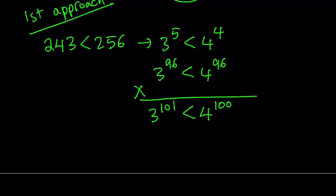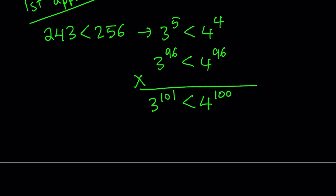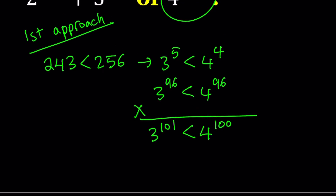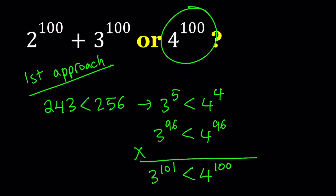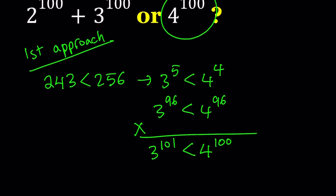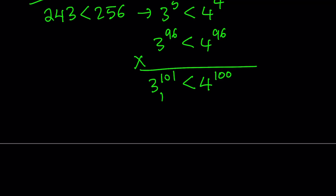Is there another way to get to this result directly? Probably. But anyway, so we have this relationship. And in our expression, we don't have 3 to the power of 101, but we have something close to it. Now think about it: 2 to the power of 100 is less than 3 to the power of 100, so we can kind of use it to our advantage. If you're wondering what 3 to the power of 101 looks like, it's going to be approximately 1.55 times 10 to the power of 48. So that's a pretty large number.